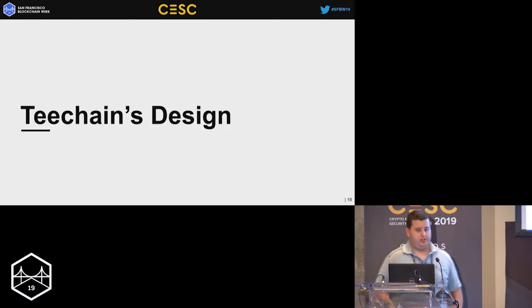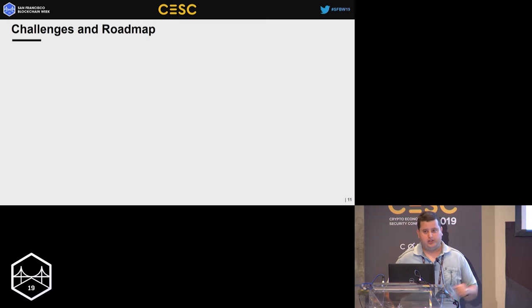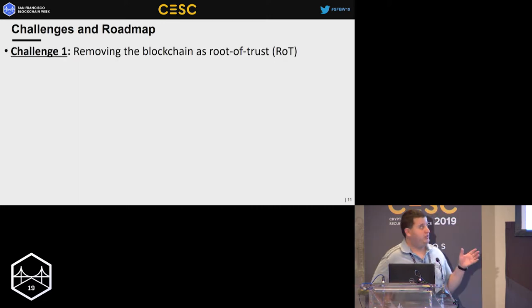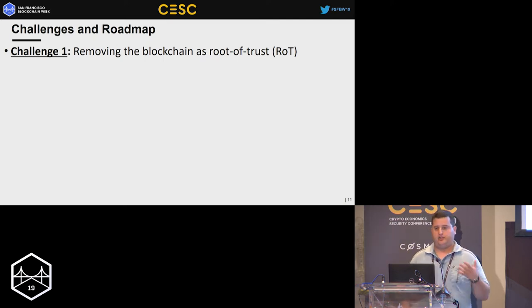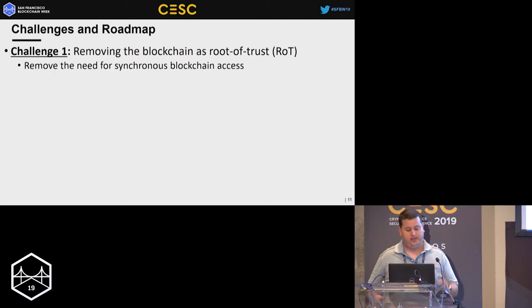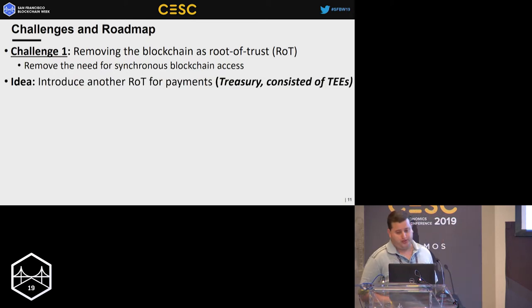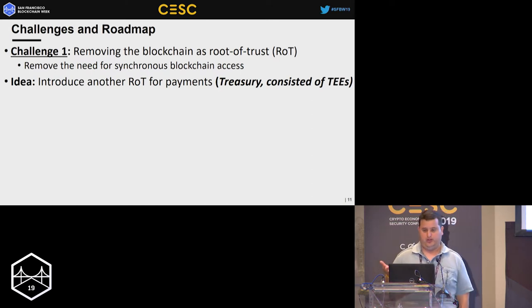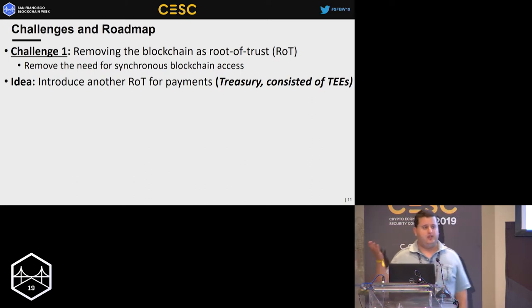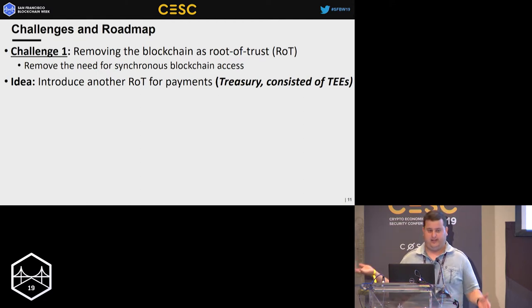This is where T-Chain comes into play. The challenges we faced when designing T-Chain: first, we wanted to remove the blockchain as a root of trust, meaning we wanted to remove the need for synchronous blockchain access. The idea we chose is to use another root of trust for payments, which we named treasuries — basically consisting of TEEs, dedicated hardware supposed to run secure code.